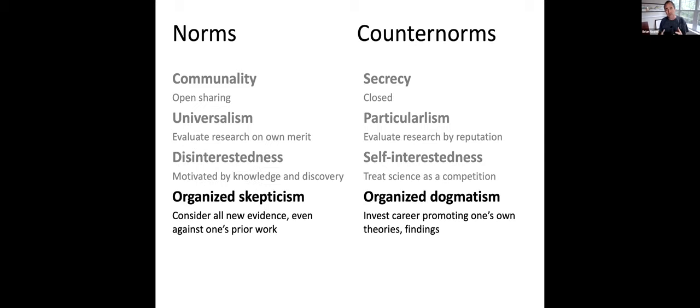And then the fourth norm is organized skepticism. A researcher considers all new evidence, even against their prior work, versus organized dogmatism, that really what I'm here to do is defend my prior claims. And while Merton didn't talk about it, a common discussion is a norm of quality versus a norm of quantity.